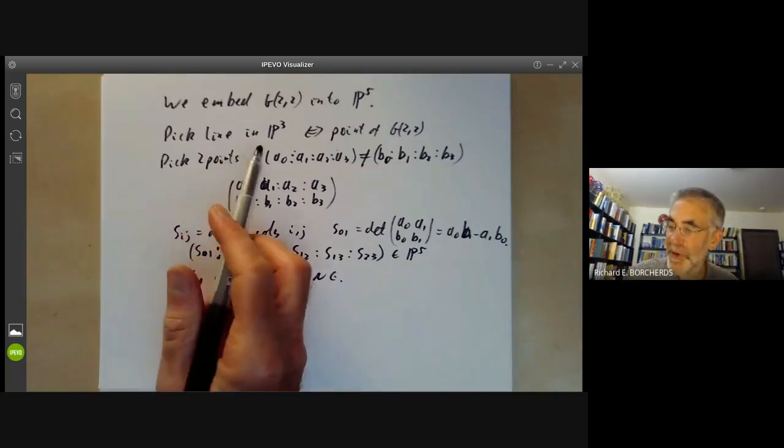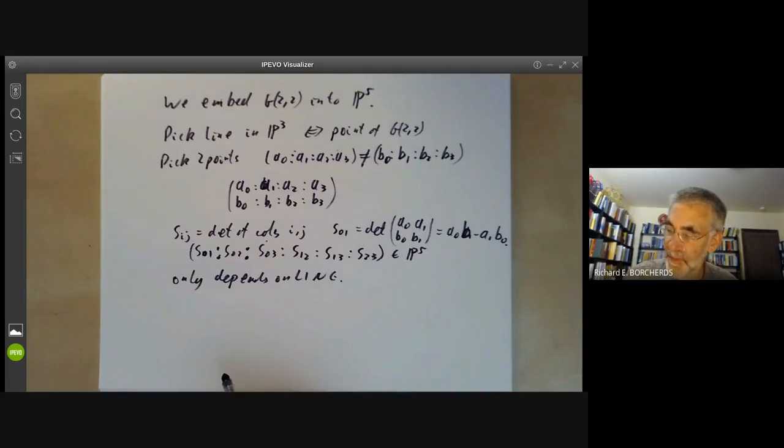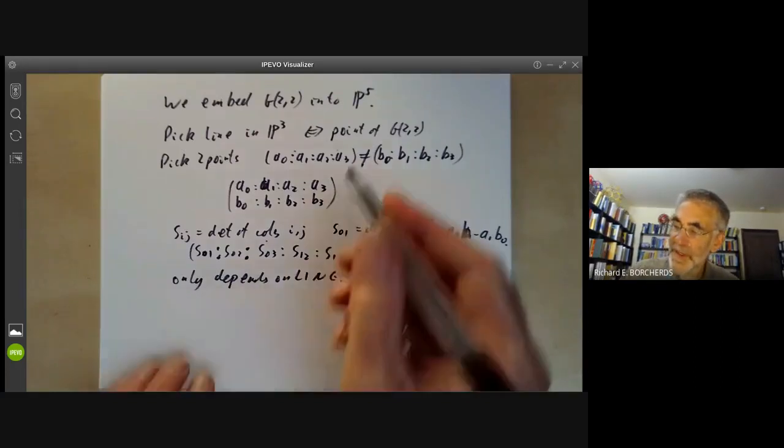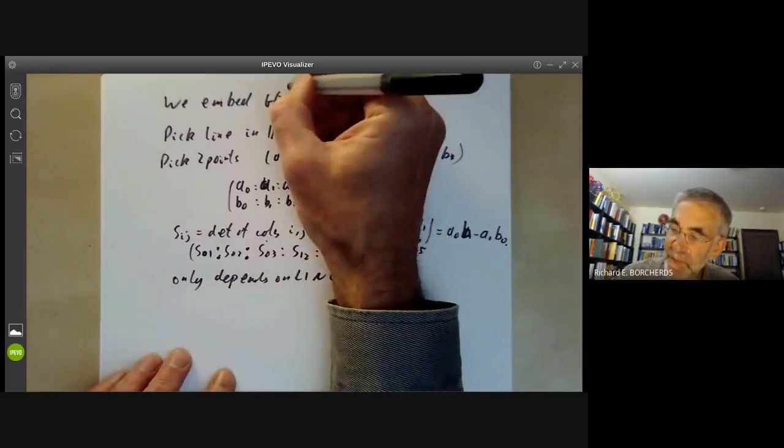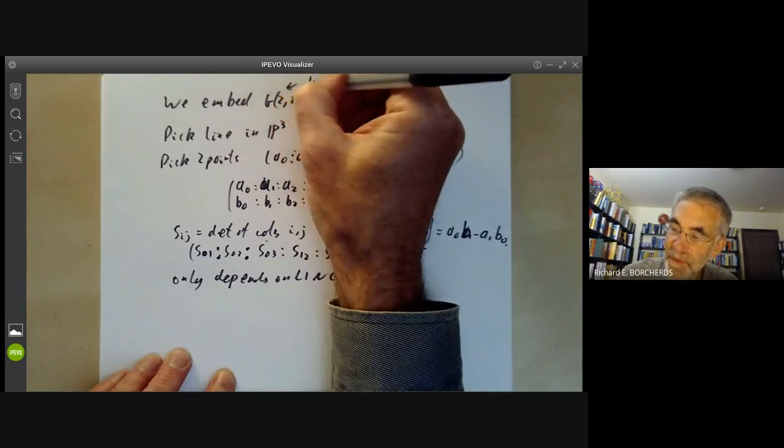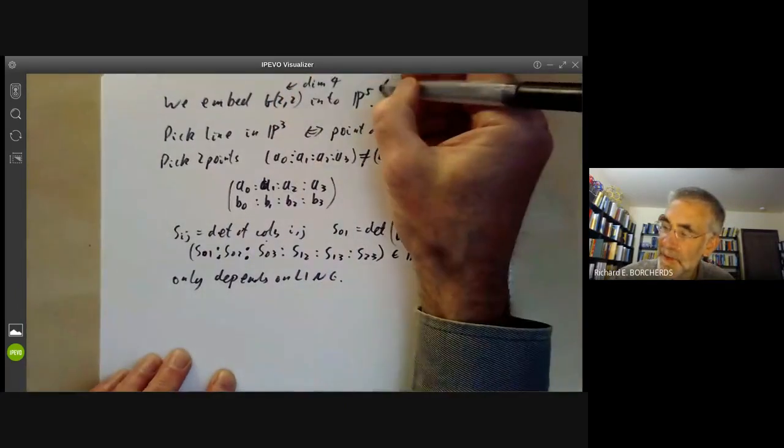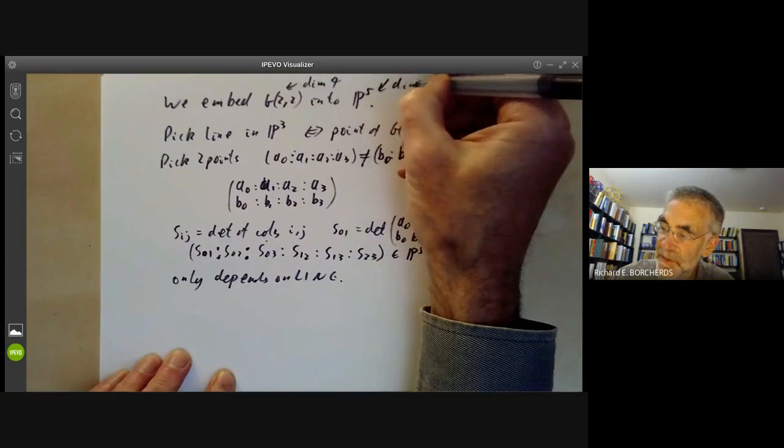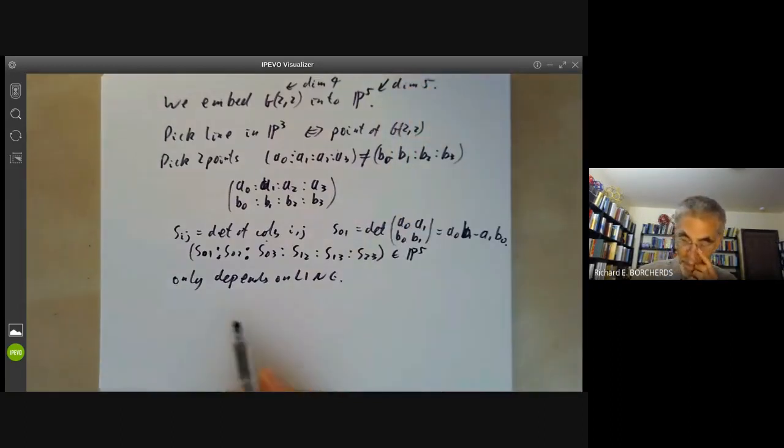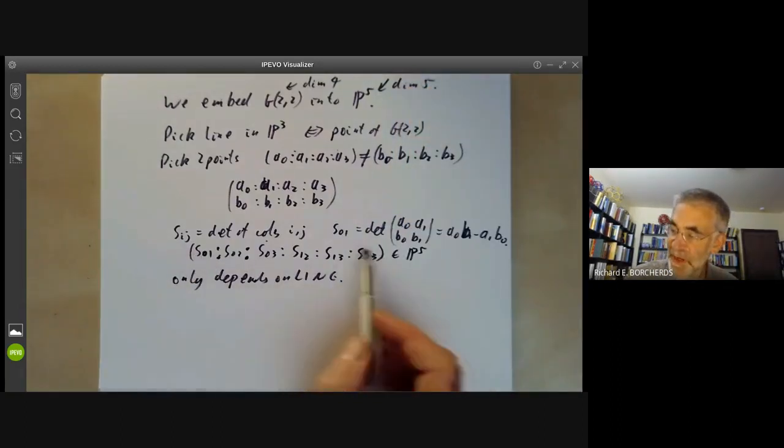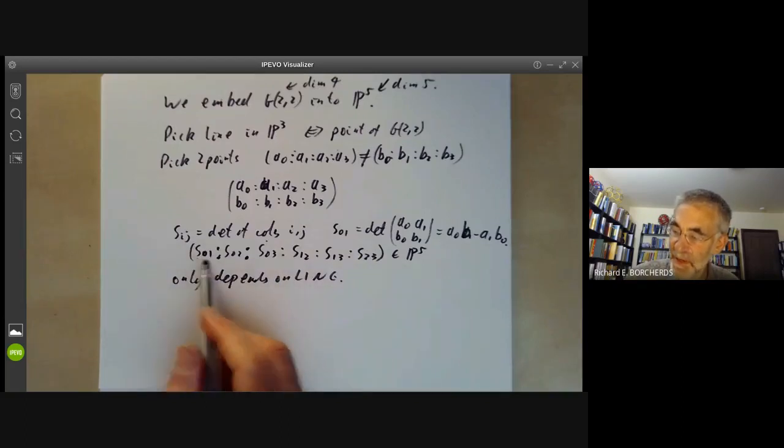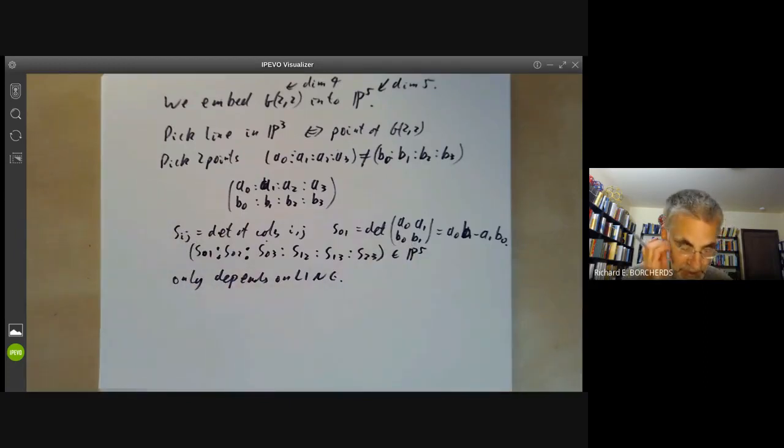Well is this map onto? Well no because the lines in P3 form a four-dimensional space and P5 obviously has dimension five. So not all points of P5 can be the image of a point of the form Sij given by all these determinants. So there must be some relation between these numbers Sij and what is this relation?